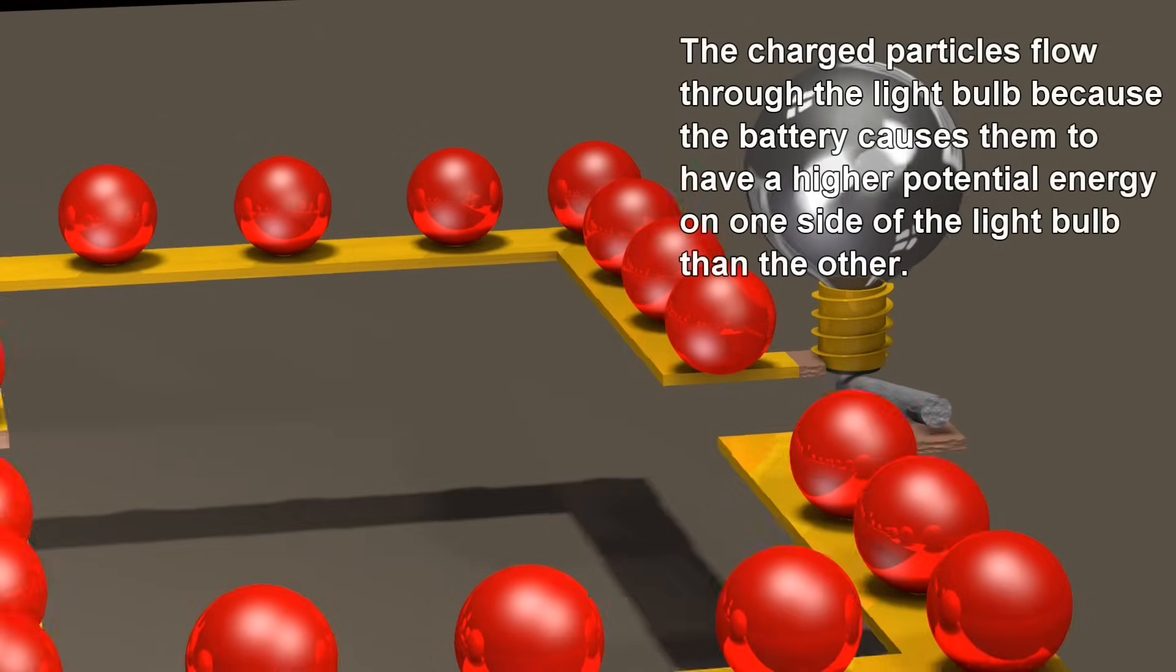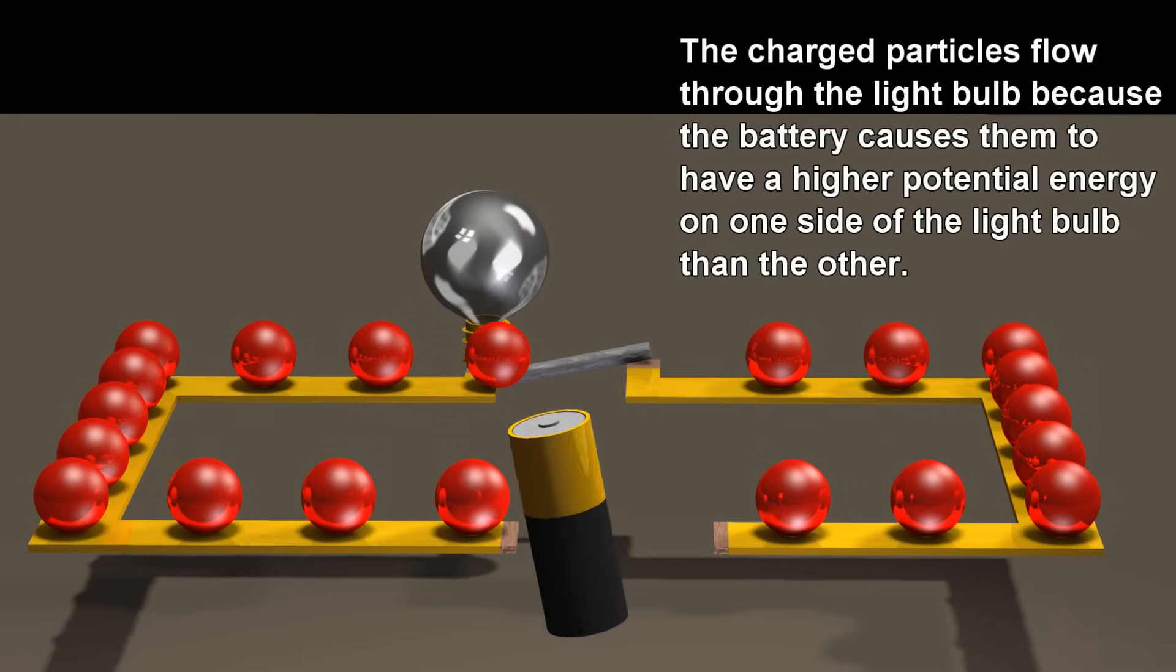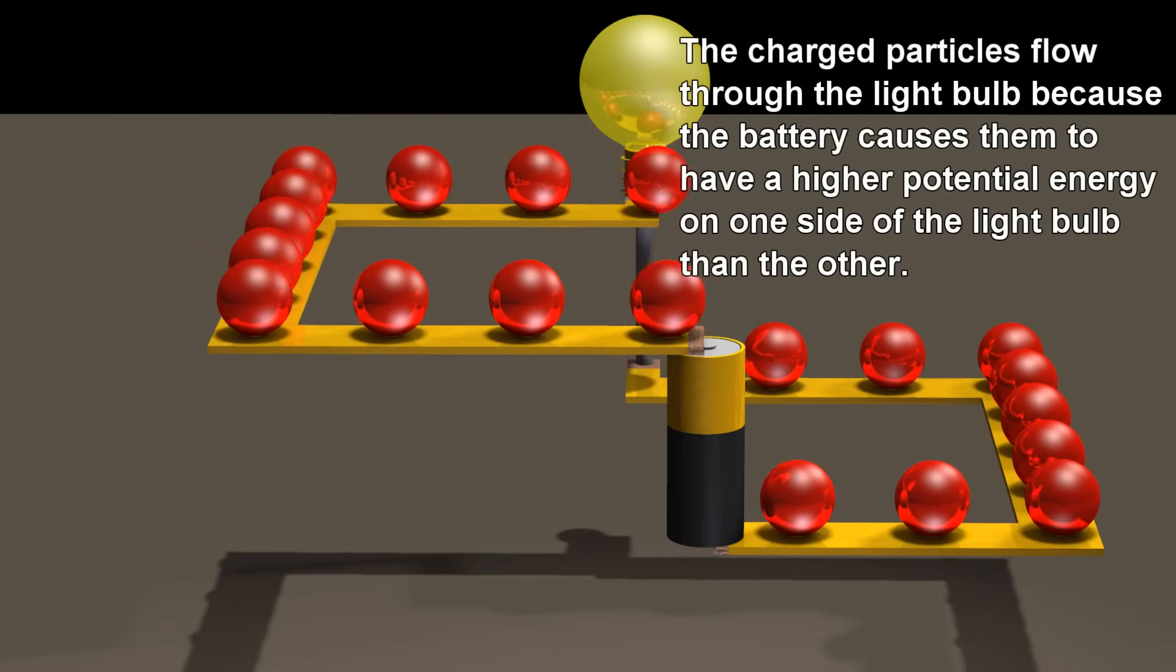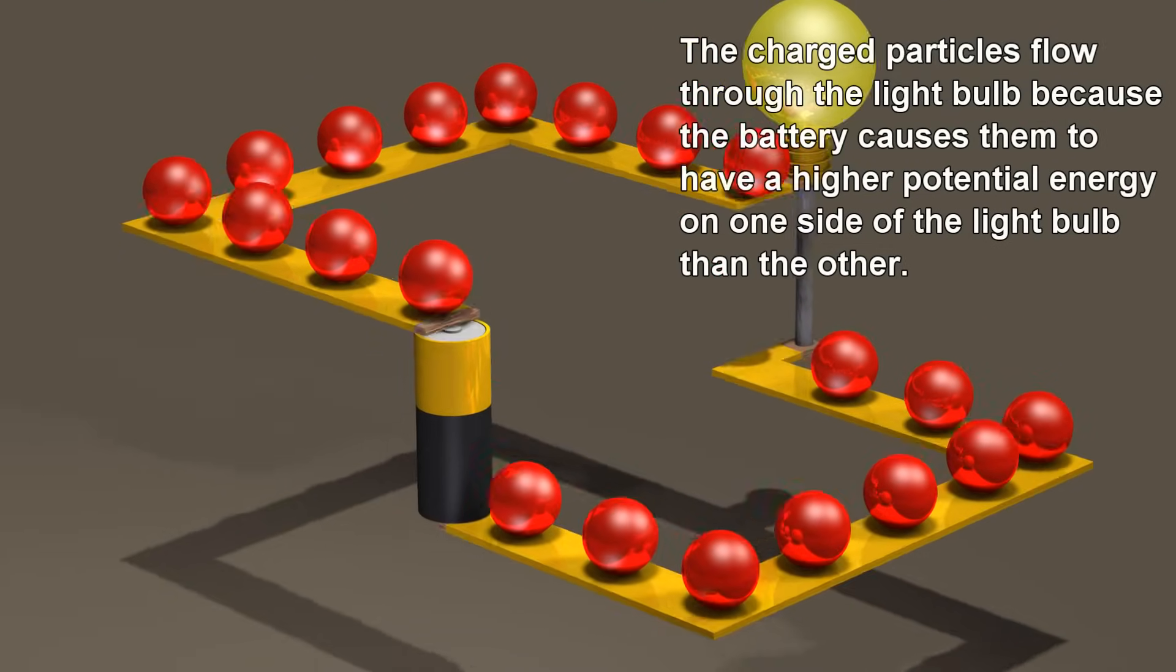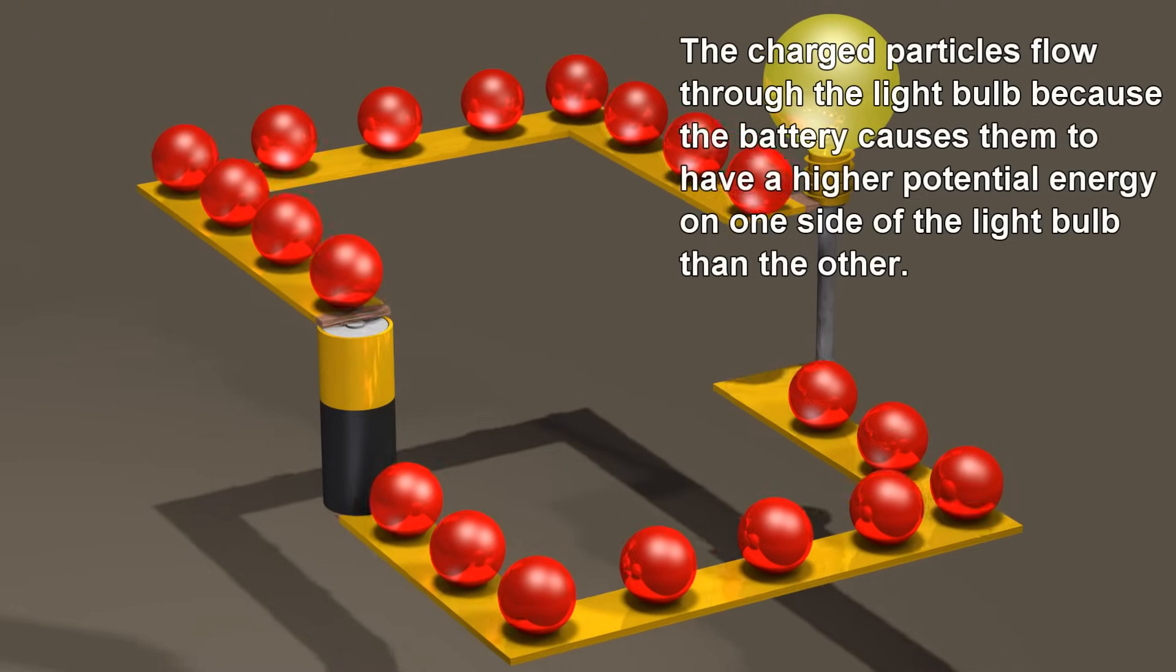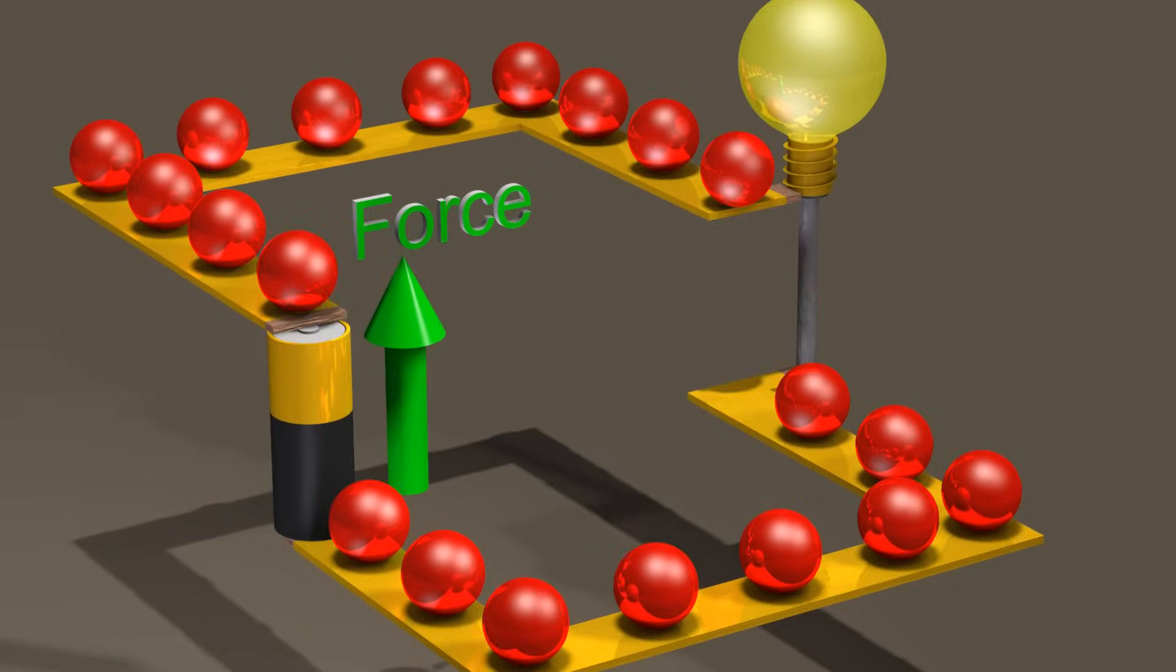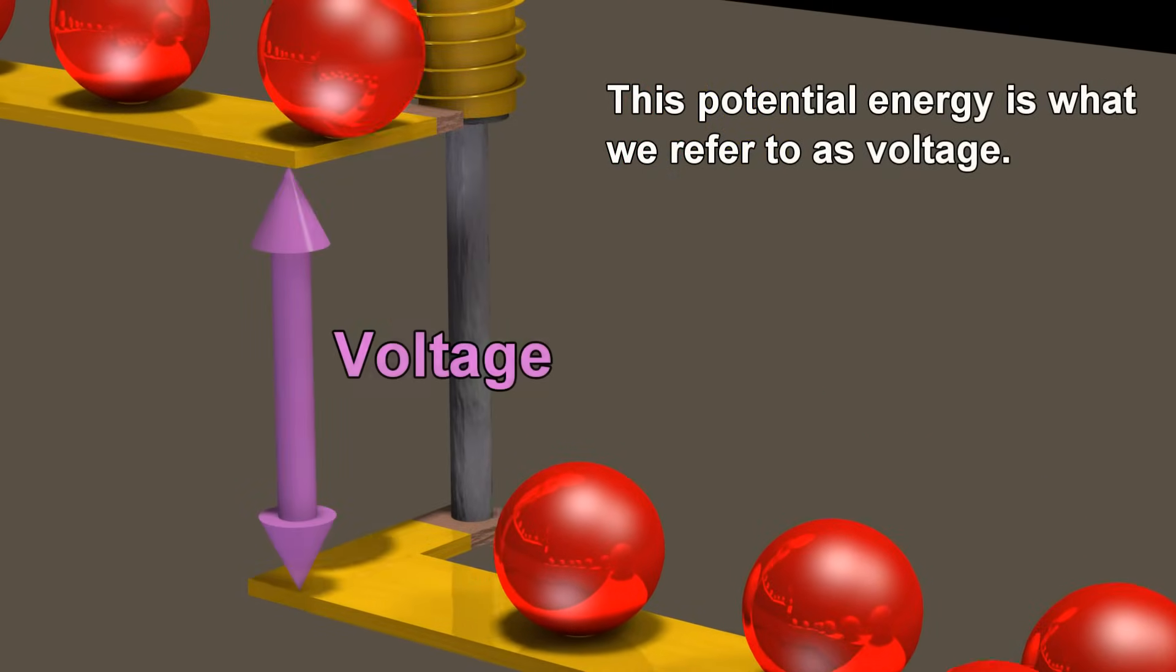The charged particles flow through the light bulb because the battery causes them to have a higher potential energy on one side of the light bulb than the other. This potential energy is what we refer to as voltage.